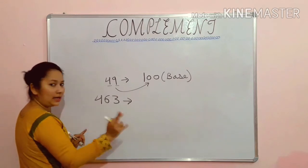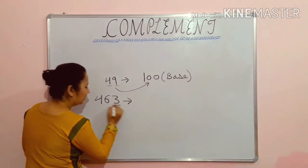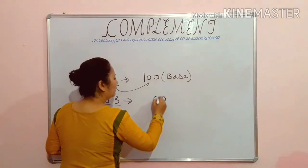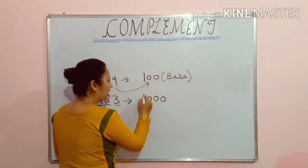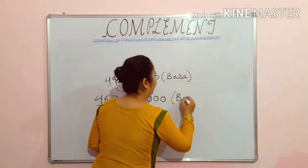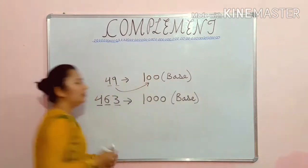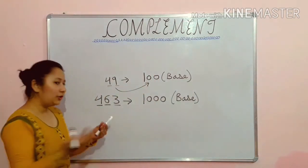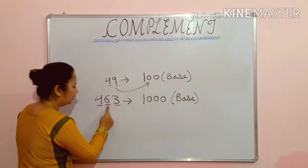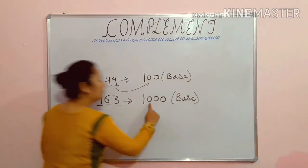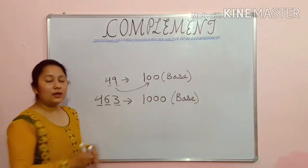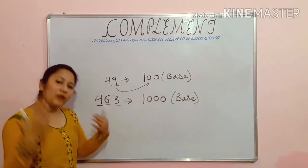Now 463 — see how many digits are there? 1, 2, 3. So your base should have 1, 2, 3 zeros, and 1 will come as it is. So your base is 1000. To find the base, count the number of digits in your number — 3 digits means 3 zeros — and put 1 in front. This way you can find the base of any number.